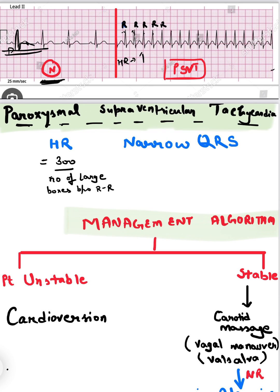Heart rate increases and we can check by this formula: 300 divided by the number of large boxes between the RR interval. In this case, approximately 300 divided by only one box, or 1.2 boxes, so the heart rate is approximately 300 beats per minute.